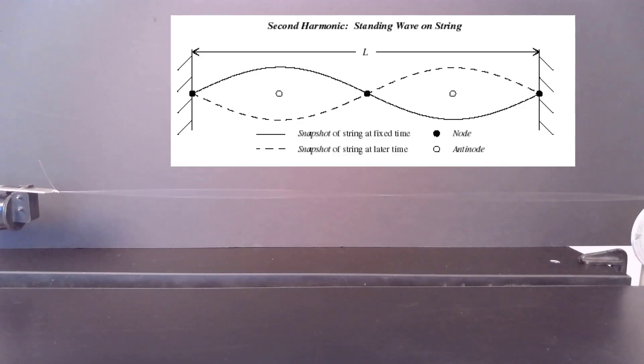Now we have added on some more weight and now we are seeing the second standing wave pattern. This has two antinodes and three nodes total.